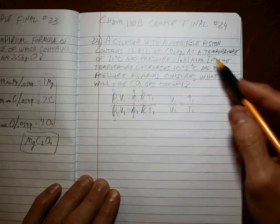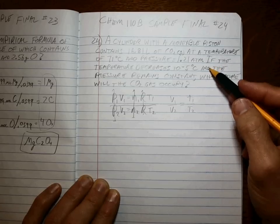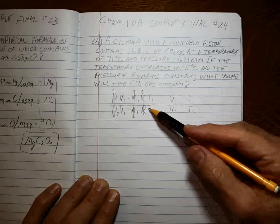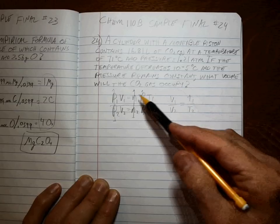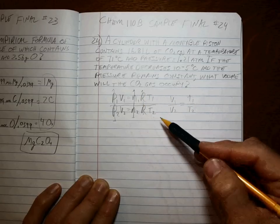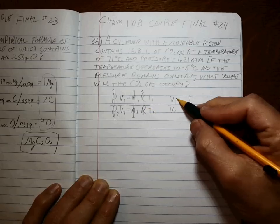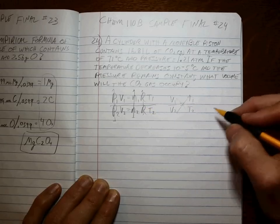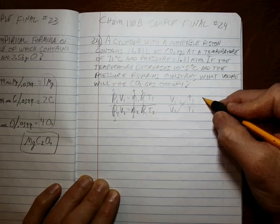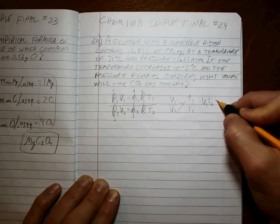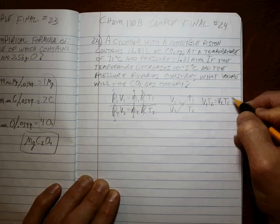Now, who knows how this problem will be whenever you go to do it? There could be all kinds of variables. Maybe only R cancels out. You just go through the same process every time. We want to cross-multiply to get everything into the numerator. So that's V1 T2 is equal to V2 T1.